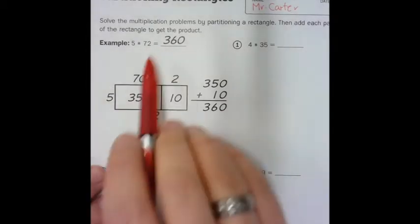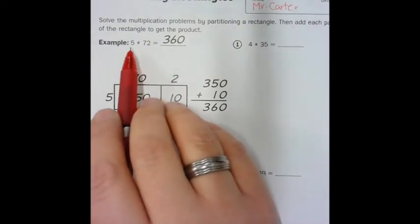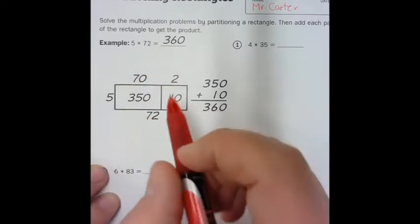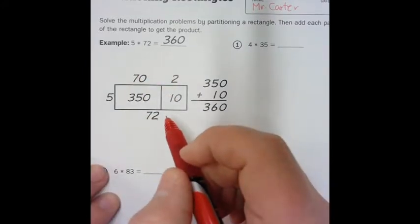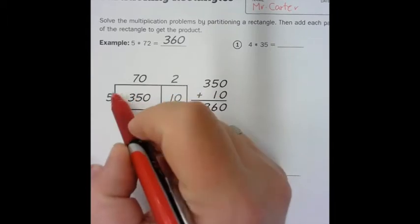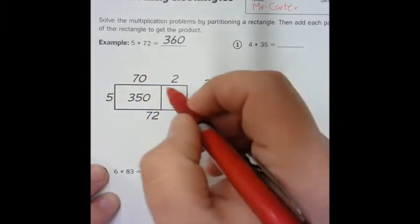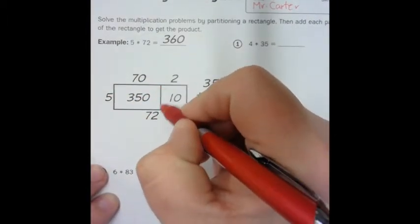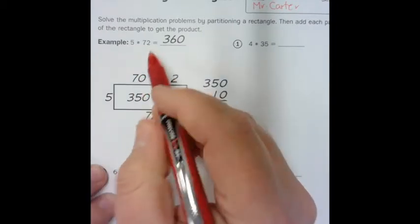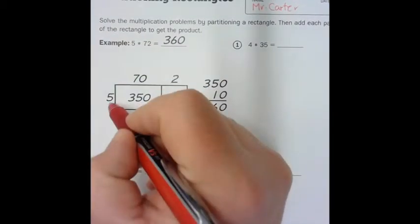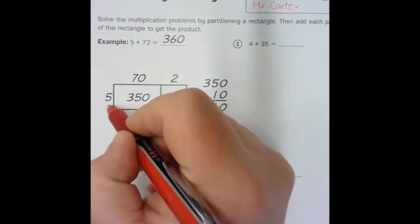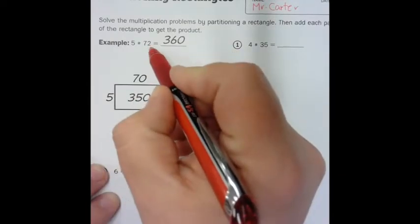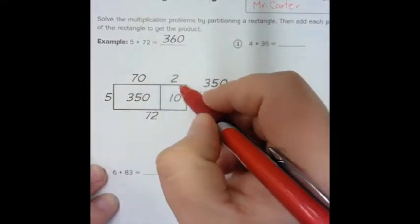So they give us an example here and our example is 5 times 72. What that looks like as a partitioned rectangle is you draw a rectangle and then you split it here, and then you put your 5 on the side over here and then you break up your 72 into 70 and 2.